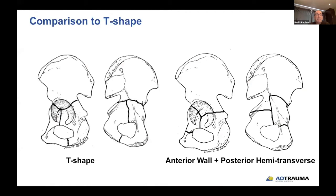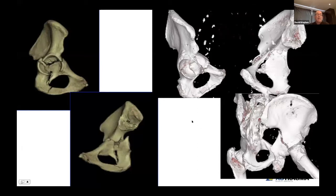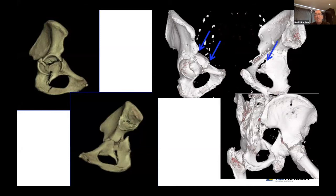As Dr. Riley pointed out last week, comparing to the T-shape: the T-shape has a fairly characteristic pattern. The distinction here is the trapezoid or segmental nature of the anterior wall/column, plus involvement of the posterior column at basically 90 degrees from that anterior involvement. On 3D scans, the T-shape exits more vertically, whereas the anterior column posterior transverse — the exit can occur through the obturator foramen but tends to be more anterior. The key distinction is this segmental nature of the anterior column wall.